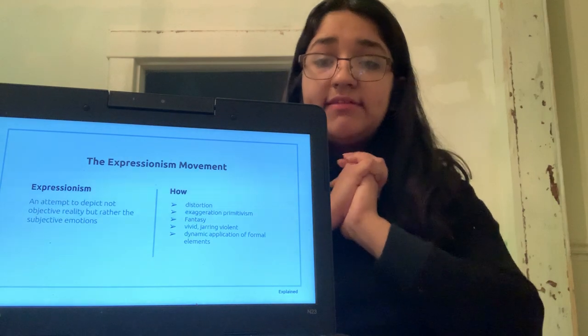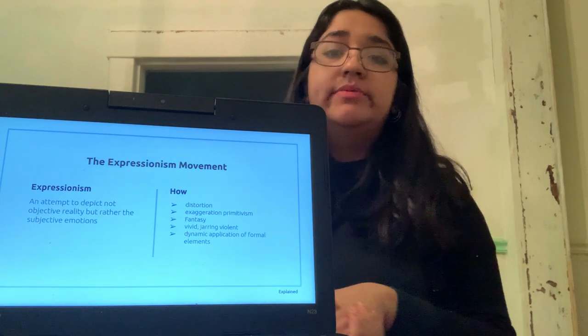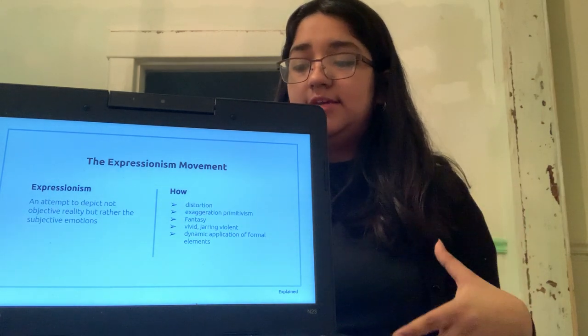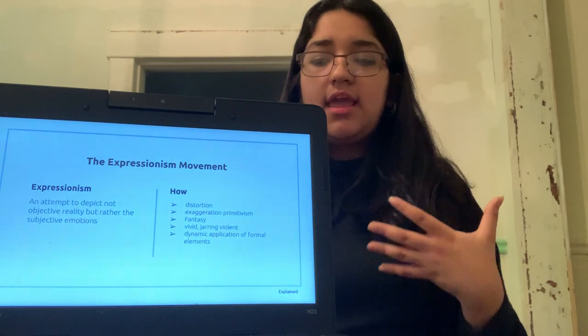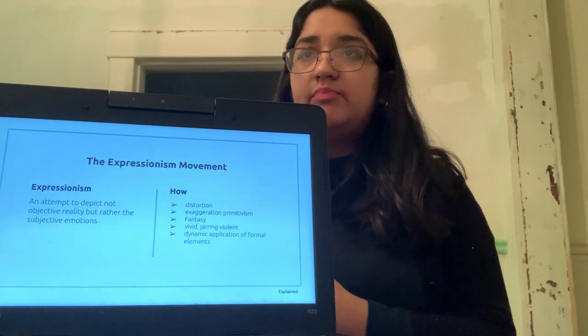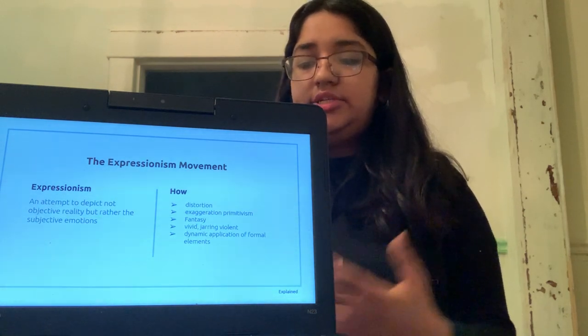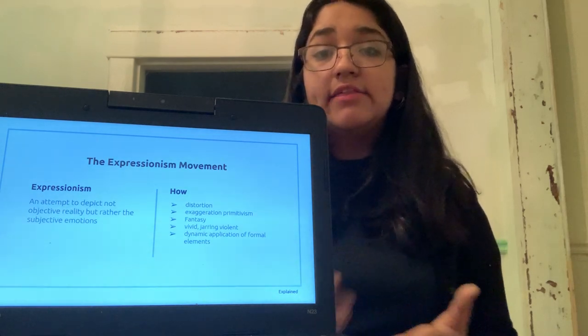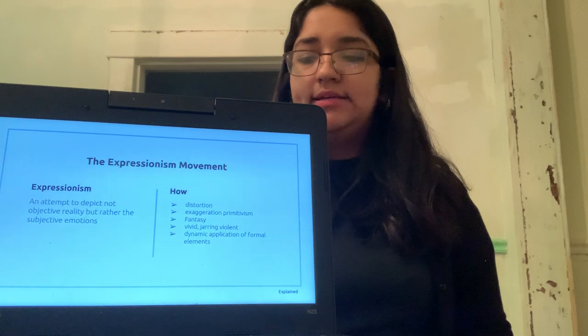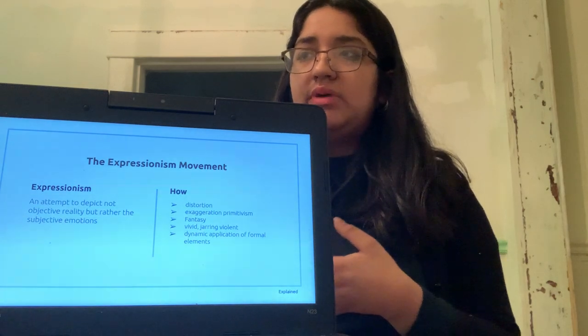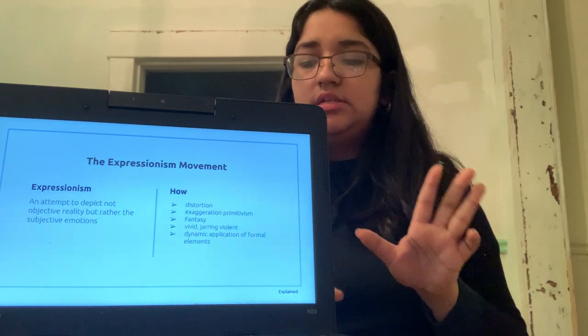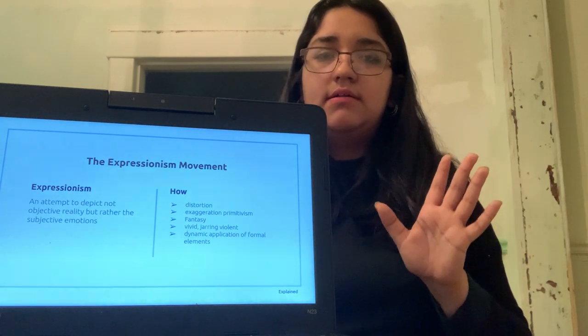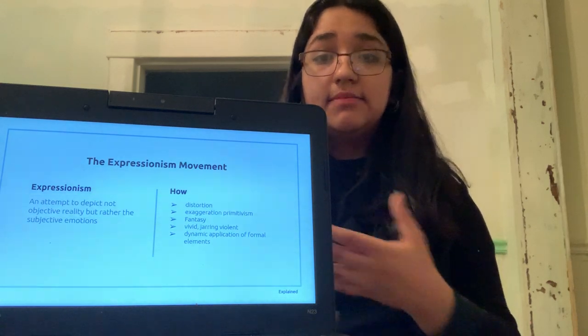The very famous expressionism movement, it started in 1905 in Germany, it was spread all across Europe because people started feeling anxiety about authenticity and spirituality. Expressionism is an art style which depicts not objective reality rather than the objective emotion that is felt while painting or before you're painting. The way it's shown is with wild colors, distortion, images of exaggerated primitism, fantasy, vivid, jarring, violent use of the elements of art.